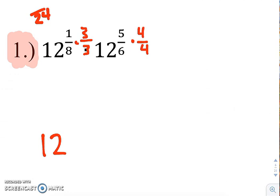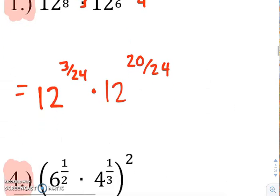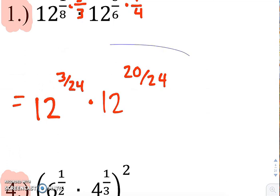So we've got 12 to the 3 twenty-fourths times 12 to the 20 twenty-fourths. So now that they have like denominators, now we can add them together and get 23 twenty-fourths.